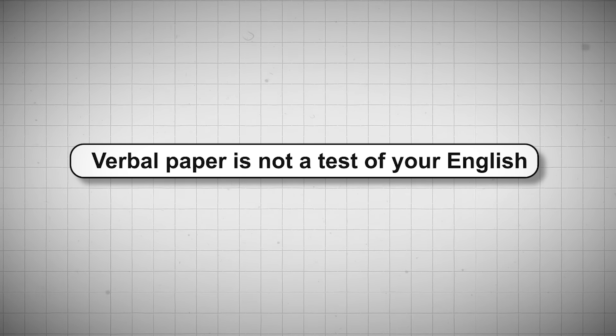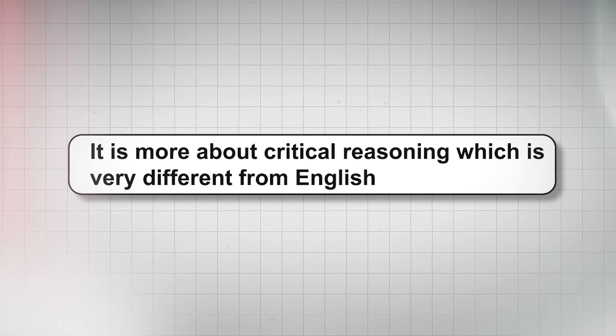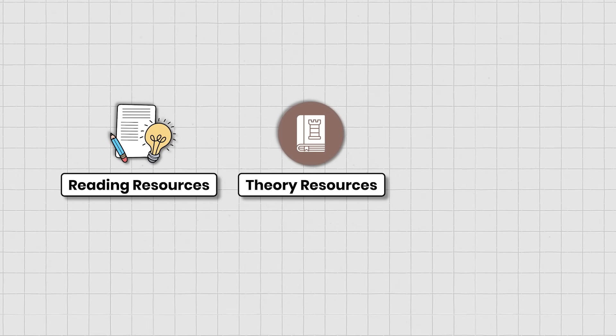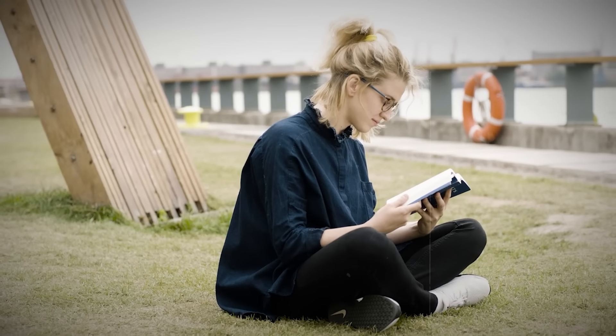Resources की बात करें, तो यहाँ हमेशा एक बात याद रखना - verbal paper is not a test of your English। अगर आपकी अच्छी English है इसका मतलब यह नहीं कि आप verbal paper में अच्छा score कर लोगे, या अगर आपकी English अच्छी नहीं है इसका मतलब यह नहीं कि आप verbal paper में score नहीं कर पाओगे। It is more about critical reasoning which is very different from English, इसलिए ही उसको verbal ability बुलाया जाता है। Resources को मैं 3 ways में divide करूंगा - reading resources, theory resources, और practice resources। Reading resources important है क्योंकि आपको develop करना पड़ेगा वो habit to read long paragraphs and retain information।